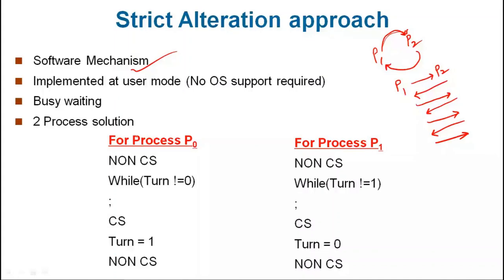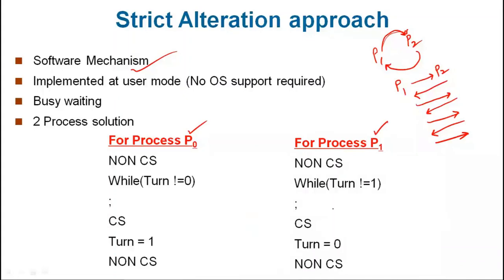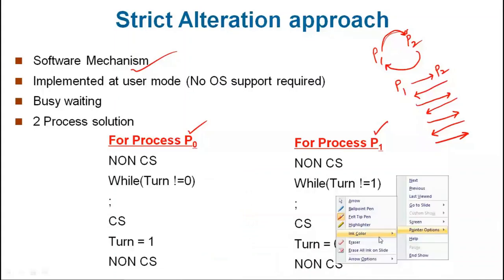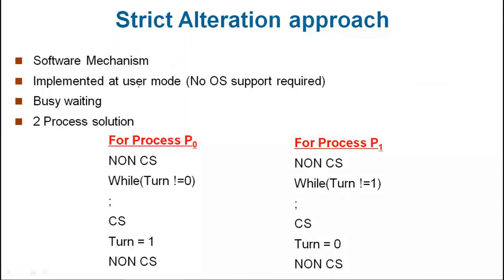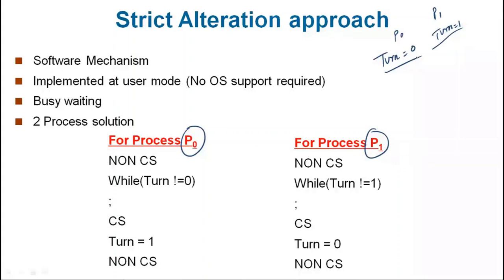Let me change the color of the pen — it will be easy to understand, and this is where our actual discussion is starting, related to the pin conversion. There are two processes: P0 and P1. We have taken a turn variable. If turn equals 0, it is the turn of P0 process; if turn equals 1, it is the turn of P1 process.